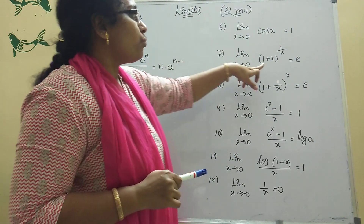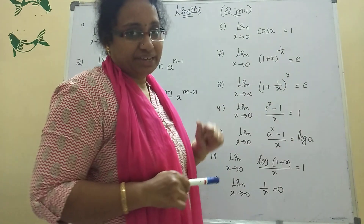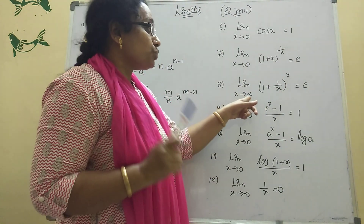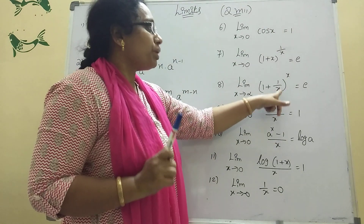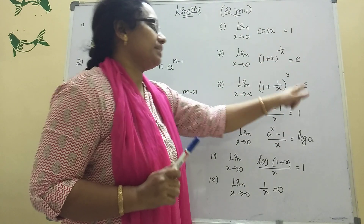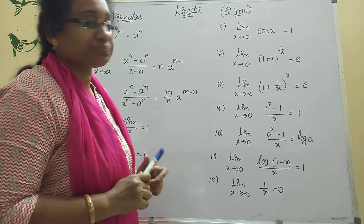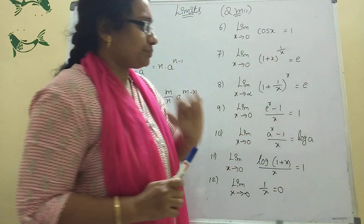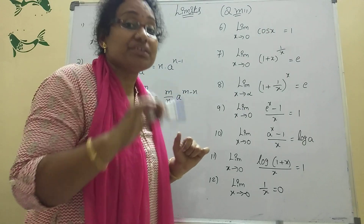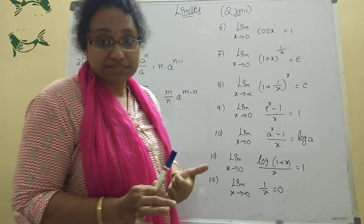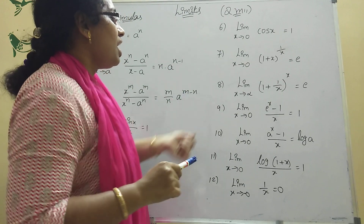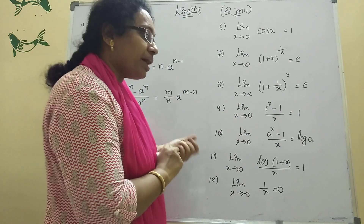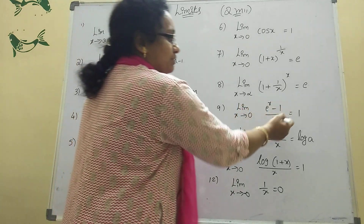Formula 7: limit x tends to 0, (1 plus x) whole power 1 by x equals e. Formula 8: limit x tends to infinity, (1 plus 1 by x) whole power x also equals e. Simply remember: whenever the power is a variable, the answer will be e.